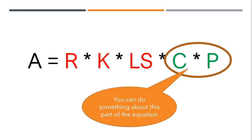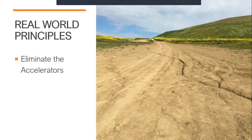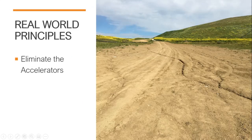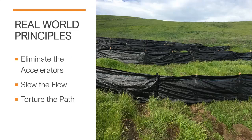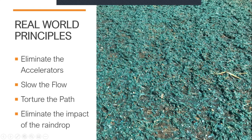That's why it's so important to know your erosion theory — you've got to understand RUSLE and what we can work with. Using that, we're going to look at some real-world principles. First, the principle of eliminating the accelerators. Second, slow the flow. Third, torture the path — a phrase I coined. And the last one: eliminate the impact of the raindrop. When you understand these principles, you'll be able to write an effective SWIP and spec out erosion and sediment control measures that have a very good chance of working.